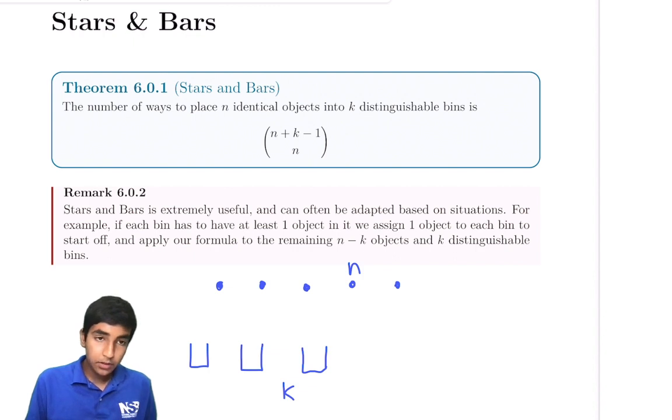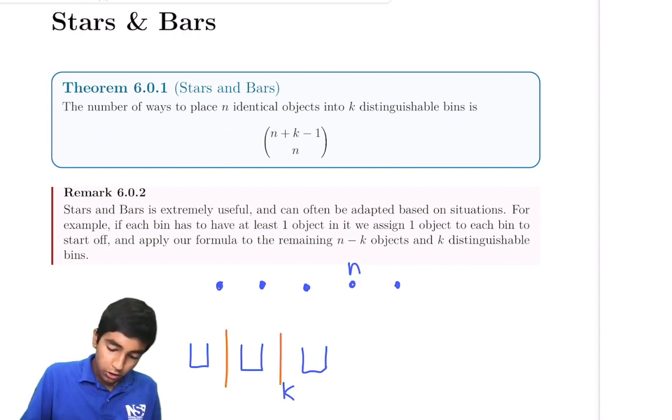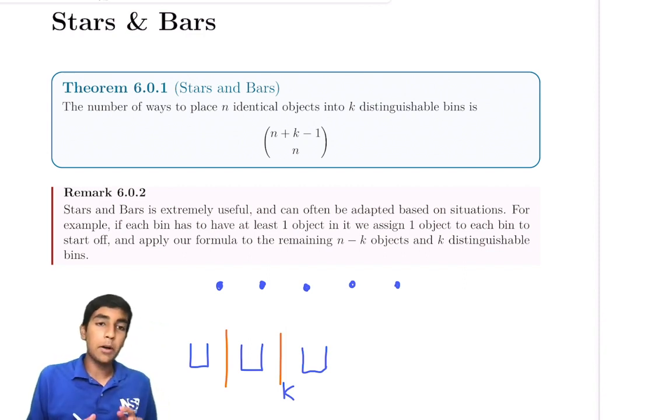The idea is that rather than dividing it up and doing casework or whatever, we can just treat them as bars. We can treat the bins as being divided by bars. For example, if we have five apples and we want to divide it amongst three bins, if we put two bars...